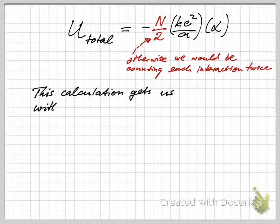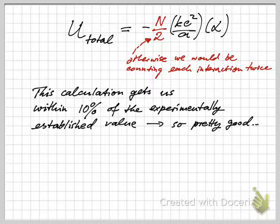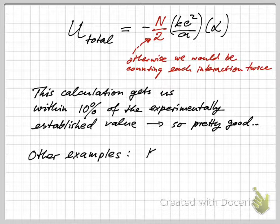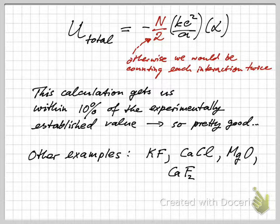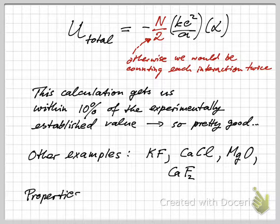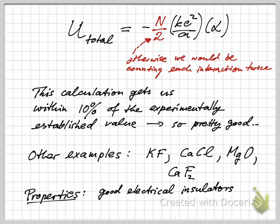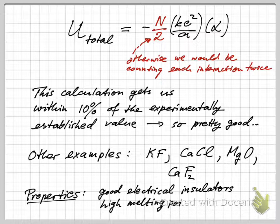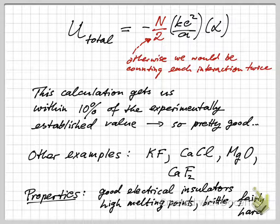This calculation gets us to within about 10 percent of the experimental value, so we're pretty good, we get pretty close. Other examples would be KF, calcium chloride, manganese oxide, and calcium fluoride, and there's many other such ionic crystals. What are their properties? They're all good electrical insulators for one. There's no free electrons roaming around. They have typically high melting points, speaking to fairly high cohesive energy, and they tend to be brittle and fairly hard crystals.